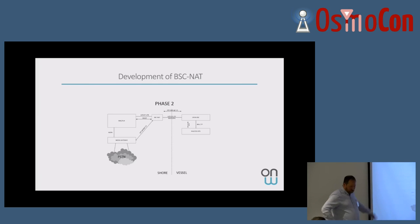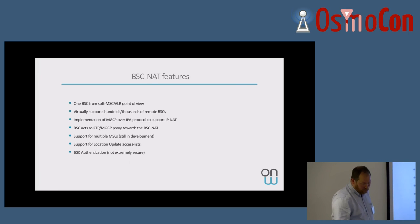So there was nothing to change on the MSC side. And actually that's really what enabled us to move into production. So from the MSC point of view, it's one BSC. You can support hundreds or thousands of remote BSCs. So we implemented MGCP, the BSC acts as a RTP, MGCP proxy towards the BSC NAT.